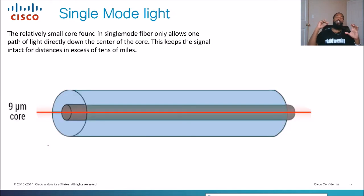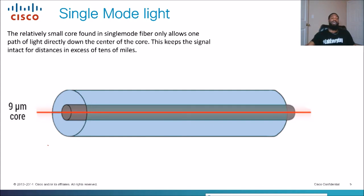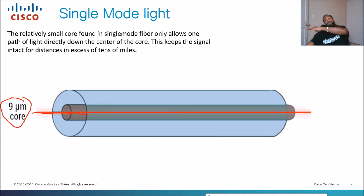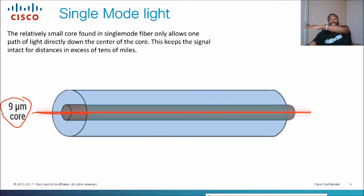When we break down how light travels in single mode fiber: the relatively small core allows one path of light directly down the center of the core, keeping the signal intact for distances in excess of tens of miles. Single mode fiber is measured at nine microns. The red laser light travels in one single straight path. A good way to remember it — S for single mode, S for straight line. That's how the light travels in single mode fiber: it just goes straight.